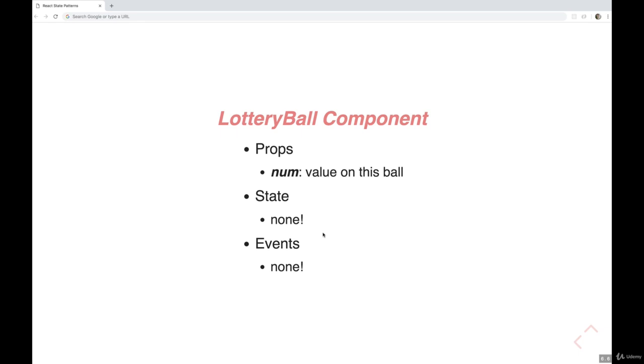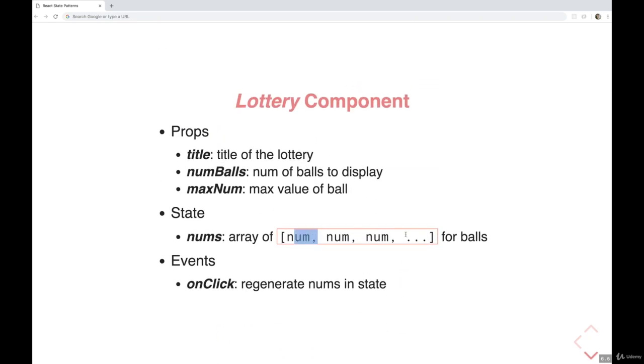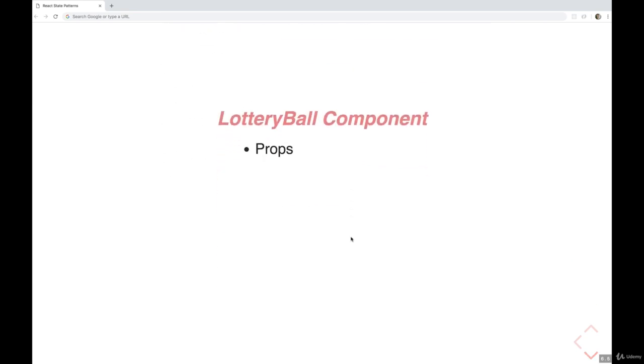And it's re-rendered over and over as things change from the parent component. As this state changes, when you click a button, it's going to trigger a re-render. Those values from the state that are regenerated will be passed down as props into our lottery ball component.